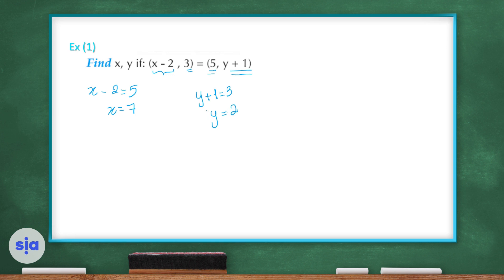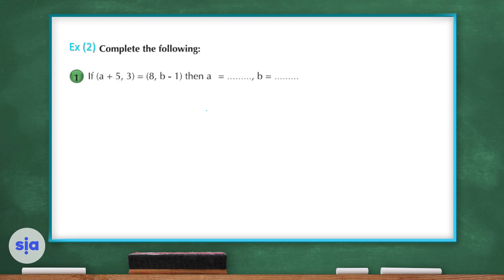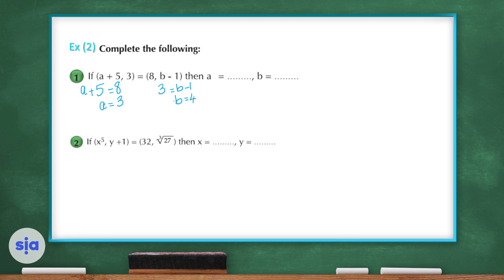Let's see another example asking us to complete the following. For question 1, the two ordered pairs are equal, so x values are equal and y values are equal. Therefore a plus 5 equals 8, giving a equals 3. For b: 3 equals b minus 1, so b equals 4.